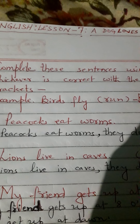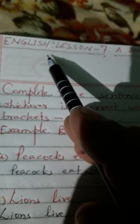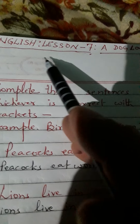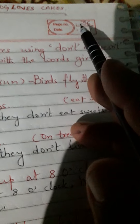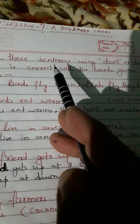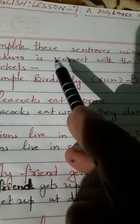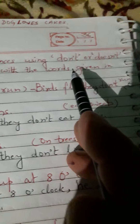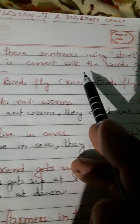Good morning everybody, welcome to this English question and answer session. It belongs to your Standard 3 English lesson 7, 'A Dog Loves Cakes'. It belongs to your page number 36. Let us participate in it with full enthusiasm and full concentration. Question number 5: complete these sentences using 'don't' or 'doesn't', whichever is correct, with the words given in the brackets.